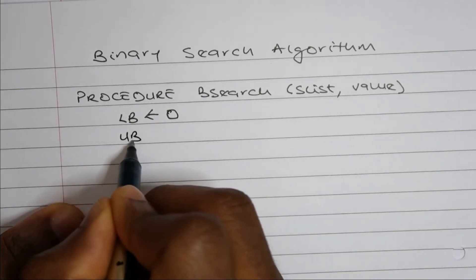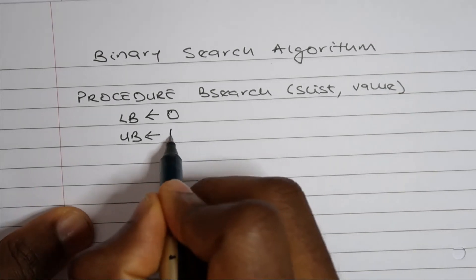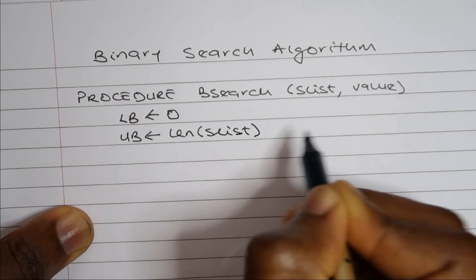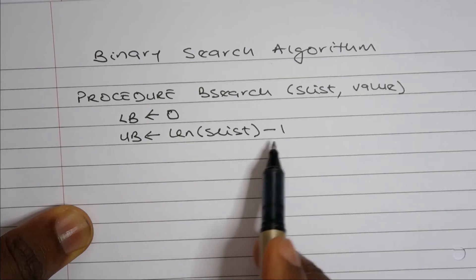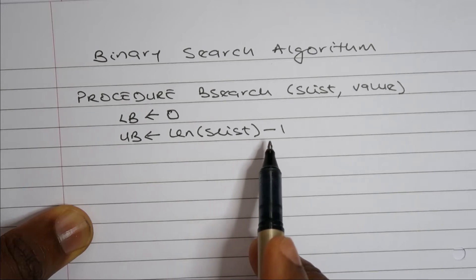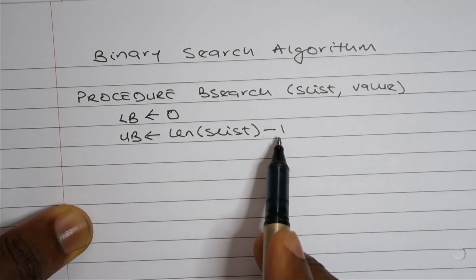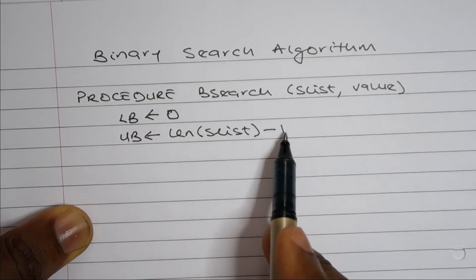The upper bound is the index position of the last item in our list. We'll find this by finding the length of our list and then taking one away from it. Some students get confused why we're taking one away from it. Don't forget that, let's say for example, we have seven items in our list. The index position of the seventh item in our list will be six. Hence the minus one there. So if you just said length of SList, that gives us seven. If we take one away from seven, that gives us six.